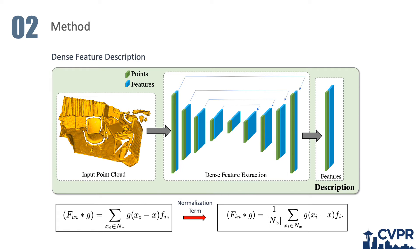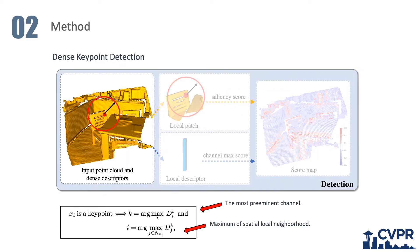For the description part, we adopt a fully convolutional setting to perform dense feature description based on KPConv. We add a dense normalization term to ensure that convolution is sparsity invariant. For the detection part, the idea is to select key points based on the local maximum across the spatial and channel dimensions of the feature maps. A point is selected as a key point if the most prominent channel is the maximum of its local neighborhood on that particular feature map.